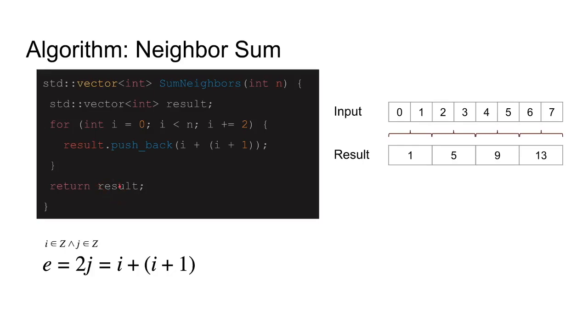The inverted statement of all the elements inside result are odd would be: there's at least one element called e which is an even number. An even number would be 2 multiplied by an integer value, so j is inside Z, which is all integer numbers. There is at least one element e which is equal to 2j. But we also know since e is inside result, e has to be i plus i plus 1, and i is also an integer. So 2j equals i plus i plus 1, and i is also inside Z.